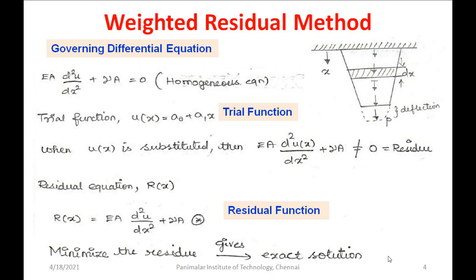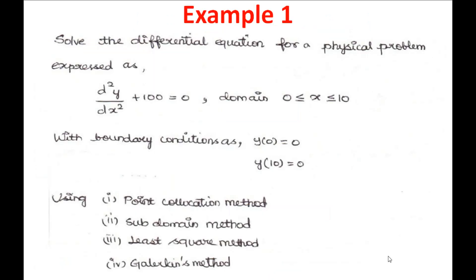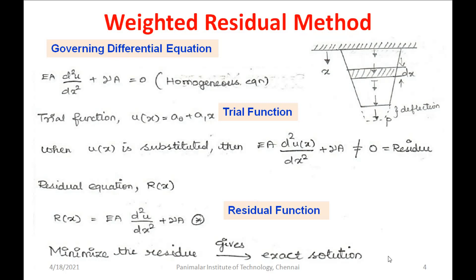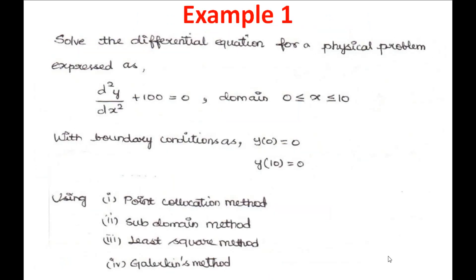To minimize the residual function, four methods have been developed. These minimization procedures are: (1) Point Collocation Method, (2) Subdomain Method, (3) Least Square Method, and (4) Galerkin Method. These procedures are used for solving the governing differential equation.